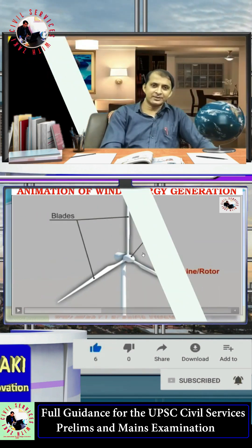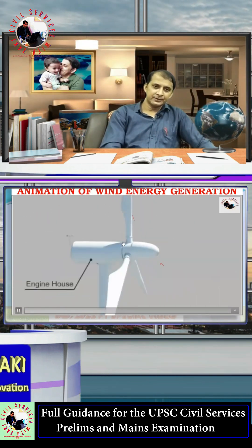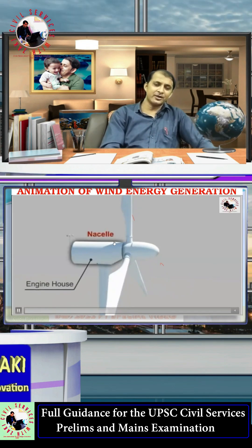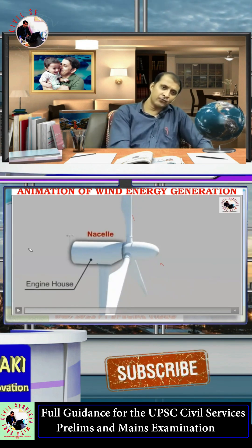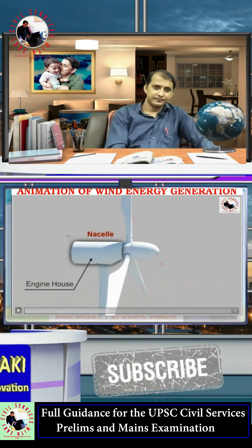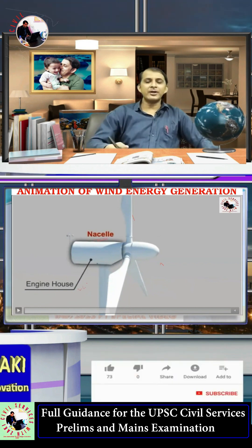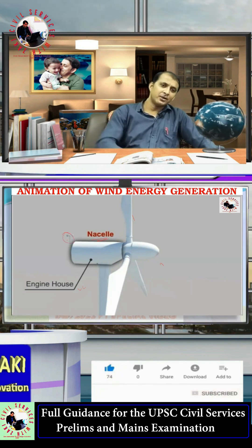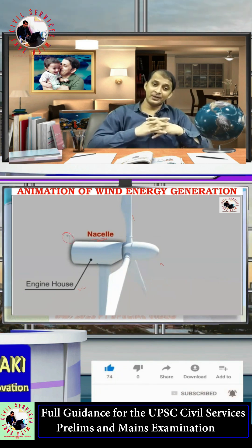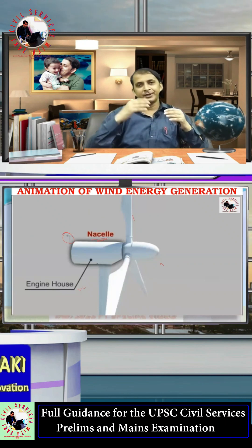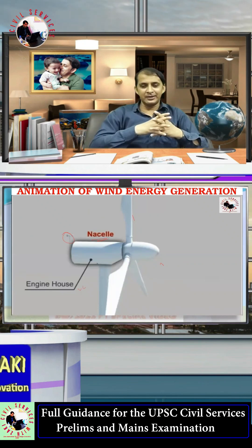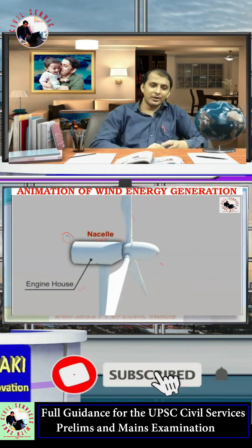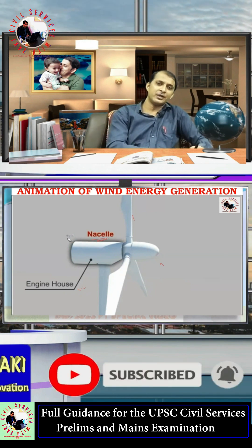Moving forward, this part is called the nacelle. The nacelle houses the internal components. Also, an anemometer is installed on the wind turbine — it helps determine the optimal wind direction and directs the turbine to face into the wind.